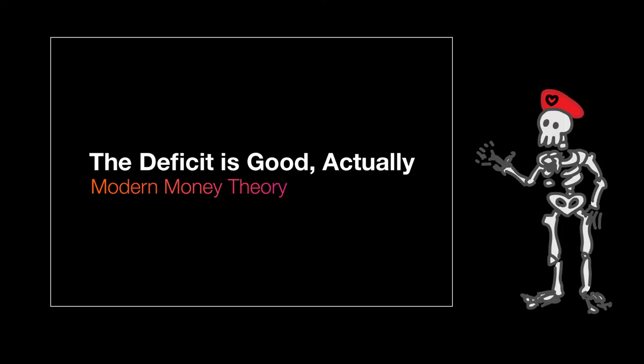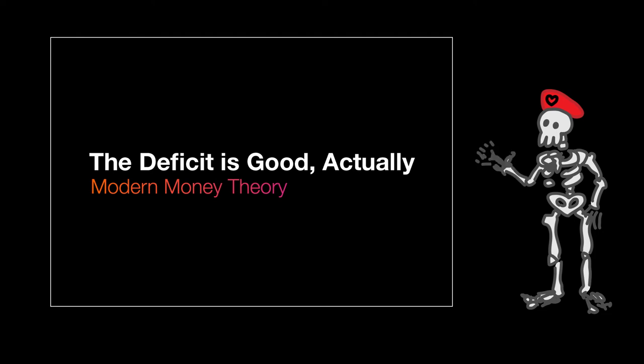All of the other stuff sums to zero. The government is the only place that new money can come from. The economy is all about the commodities, the real assets. There is nothing to prevent the federal government from creating as much money as it wants and paying it to someone. The question is, how do you set up a system that ensures that the real assets are created which those benefits are employed to purchase?